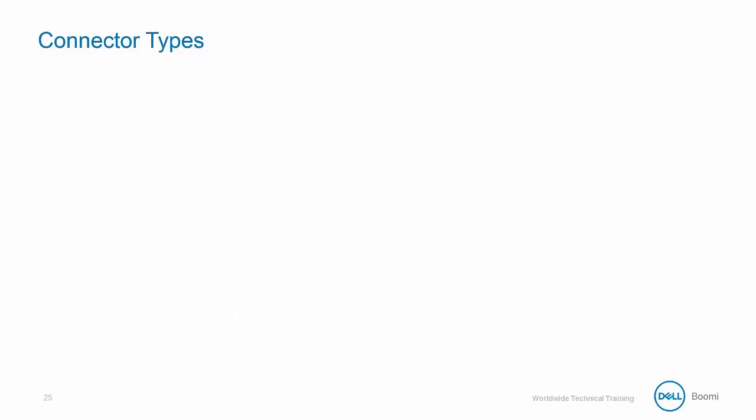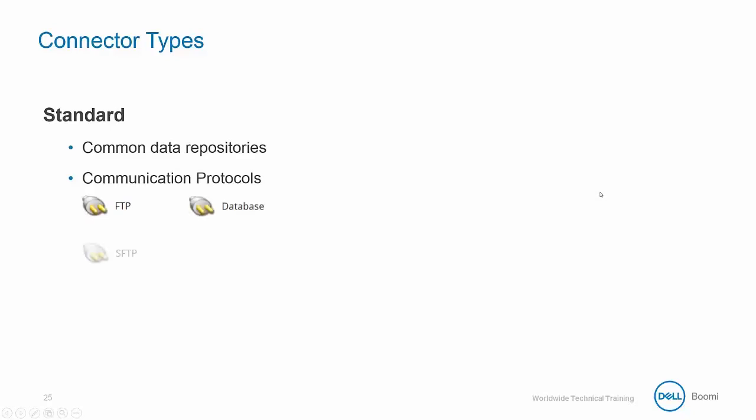Atmosphere contains a library of connectors within the shapes palette to provide access to an infinite number of software systems and data standards. The first type are the standard or generic connectors, which are commonly used in file integration where you need to get or send data to or from a common data repository.